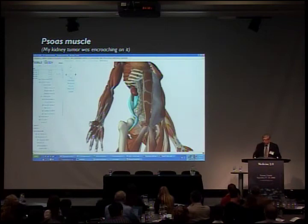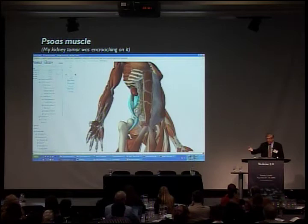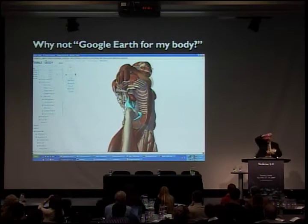For free, you can turn on the skeletal system, the nervous system, and so on. You can click on things to remove them. And I was able to create this image of the relationship between my kidney and the psoas muscle, and then rotate it in 3D.